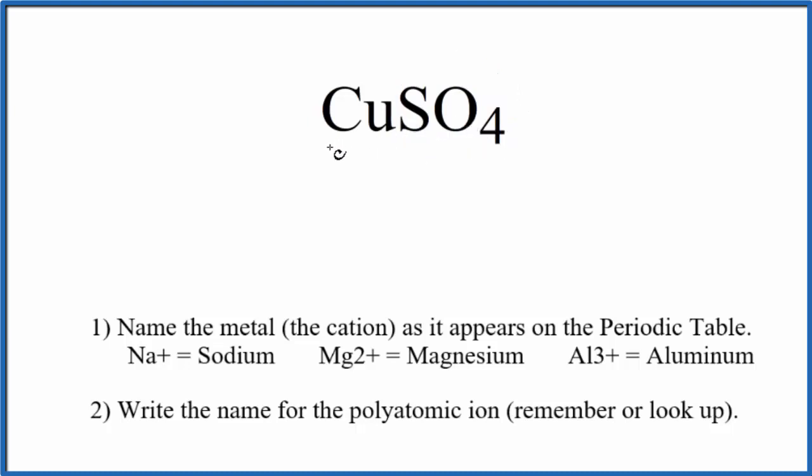So we have the sulfate ion bonded to the copper. And copper, that's a transition metal. So we have this metal bonded to this group of nonmetals, this polyatomic ion. This is an ionic compound.